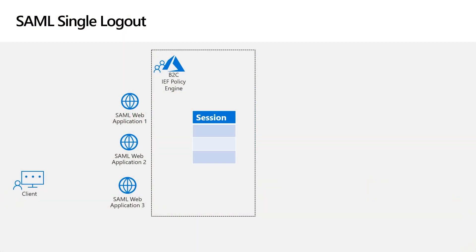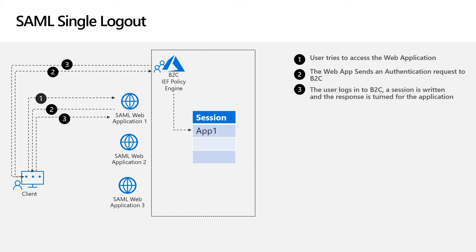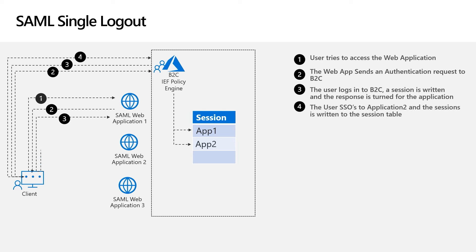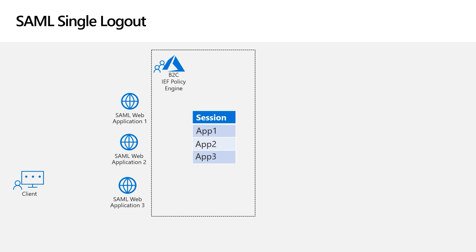Let's discuss how B2C uses SAML single logout to end the session on all SAML applications it's logged into. To explain how B2C implements single logout, we'll first look at how it establishes the list of web applications it needs to log out from. The user logs into the web application, which sends a SAML authN request to B2C. B2C logs the user in and stores a session in a session table. The response is sent back via the client browser. The user then accesses web application 2, which similarly sends an authN request to B2C. Because B2C is already logged in, it single signs on the user and returns the response to the application, adding another session to the session table. The same occurs for the third web application. B2C now has three SAML sessions stored that can be used to single logout the user.